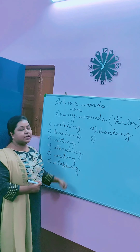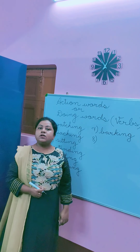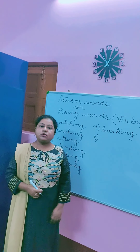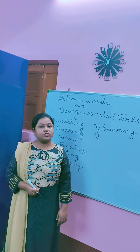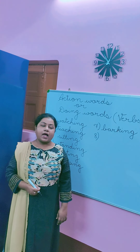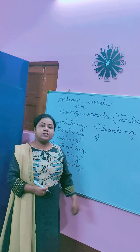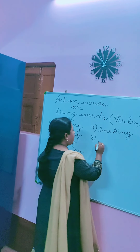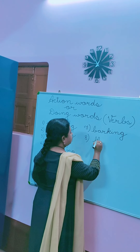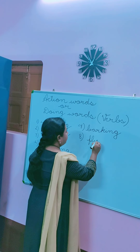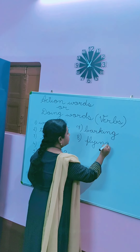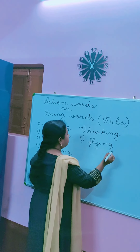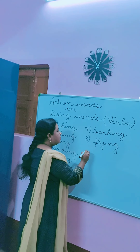Now, a bird was sitting on a tree — sitting is also an action word. Now the bird starts flying. So what action is the bird doing? The bird is flying, isn't it? So flying is also an action word — F-L-Y-I-N-G. This action is performed by a bird.